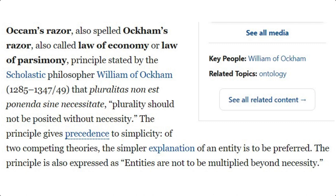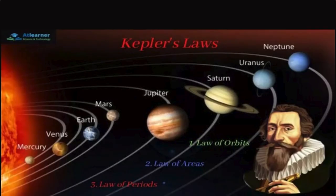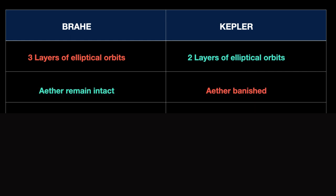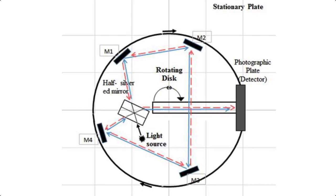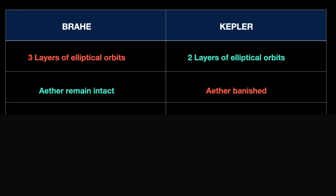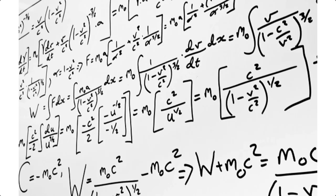Now, in light of all this, wouldn't it be a good idea to reconsider how the Brahe and Kepler models now fare in the light of Occam's Razor? Brahe's model requires three layers of ellipses moving round a centre; Kepler's requires only two. Brahe's model keeps the long-established ether intact. Kepler requires the ether to be banished, in spite of the fact that experiments like those of Sanyak and Michelson and Gale confirm its existence. Brahe's model requires simple, easily understood mathematics. Kepler's model requires Einstein's abstruse mathematics, with time and space being plastic and variable, and depending on the movement of an observer.